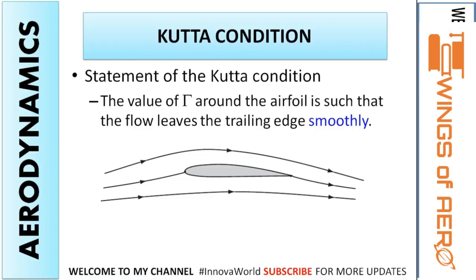First, I will cover the Kutta conditions. The Kutta conditions have three conditions. The first one is: the value of circulation along the airfoil is such that the flow leaves the trailing edge smoothly. As you can see in the airfoil figure, how the flow is leaving through the trailing edge.